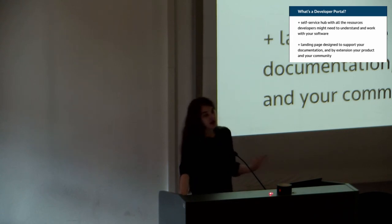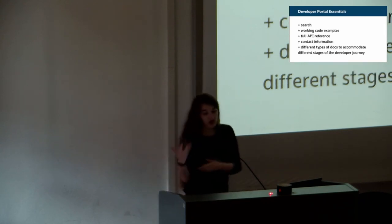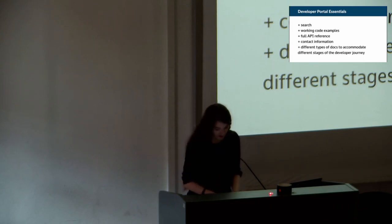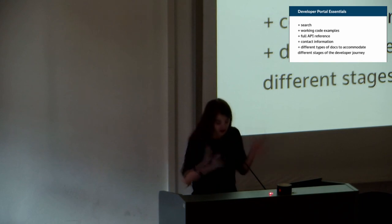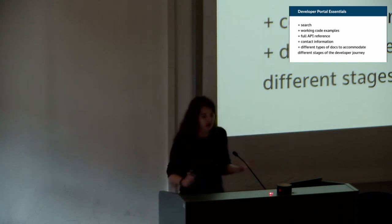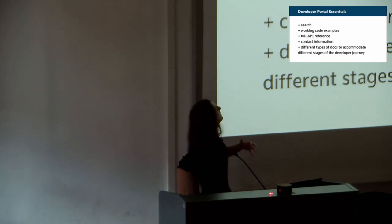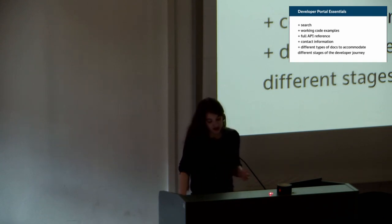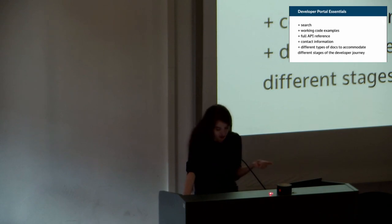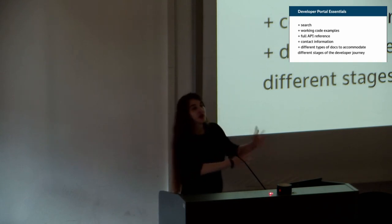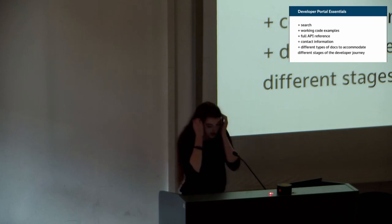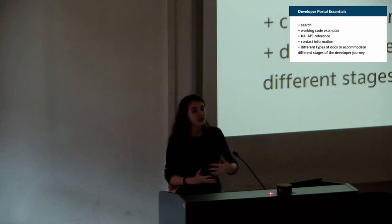How do we get it right? Here are some essentials every developer portal should have. First, search — a search function basically tells developers here's how you can find whatever you need. You need working code examples so developers can start working with your technology immediately. You need full references — if you have APIs, always have a full API reference. And you need some kind of human contact information, whether a mailing list or a Telegram group, to show them how to find help if they get stuck.